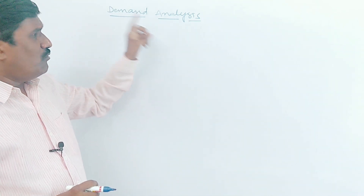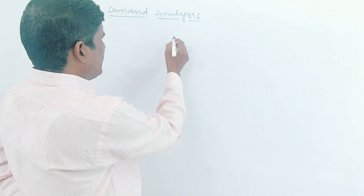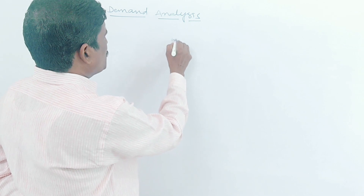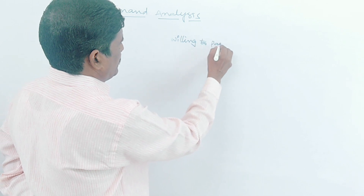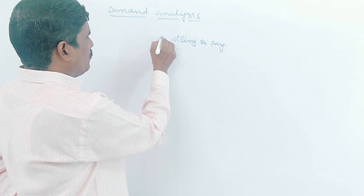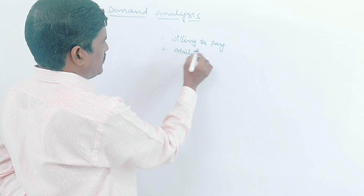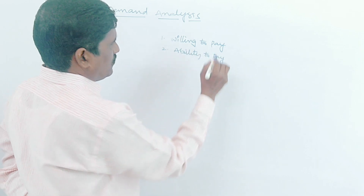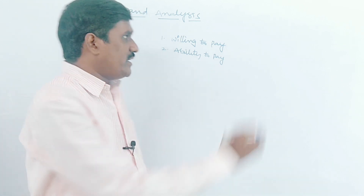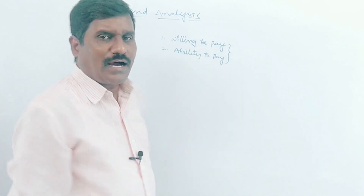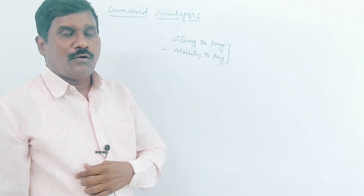What is demand? Here for example: first, desire; and then willing to pay. Second, ability to pay. When we fulfill both willing to pay and ability to pay, we create demand. Willing to pay and ability to pay will together create the demand.